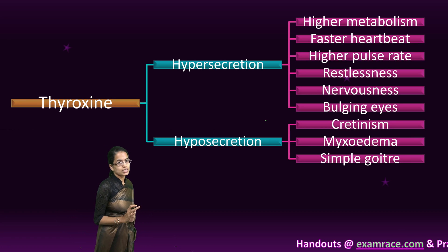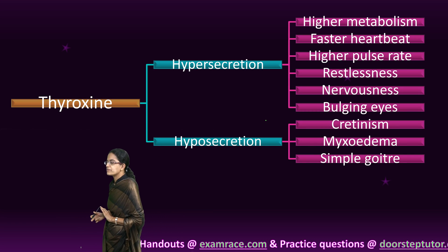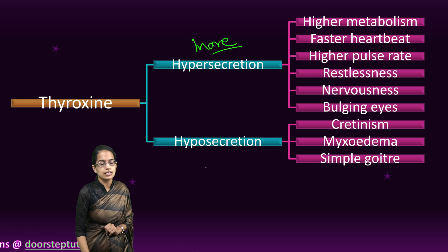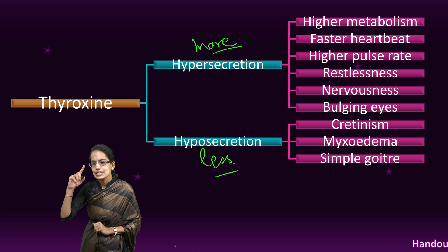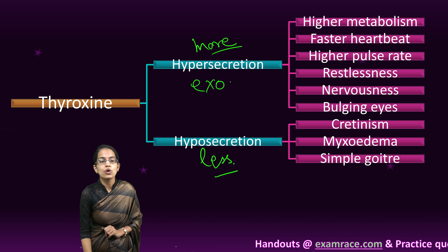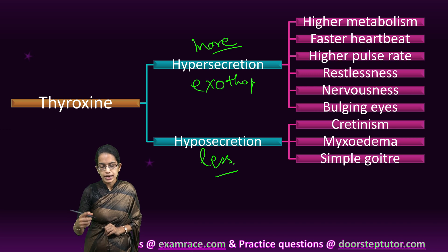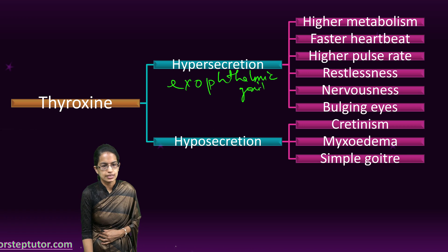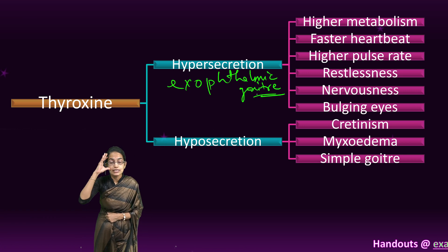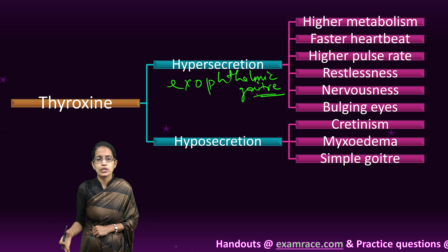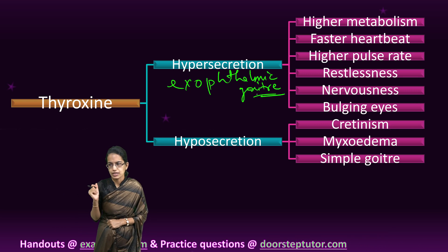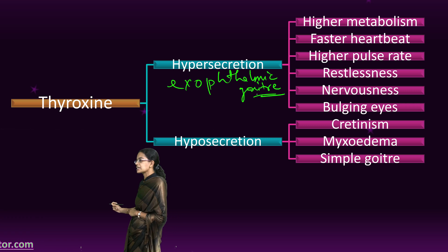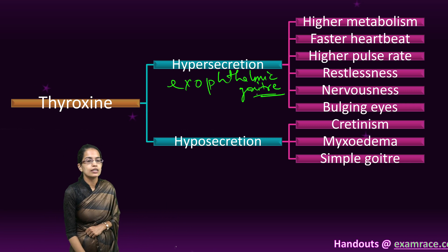The thyroid gland can develop disorders. If there is more secretion — hypersecretion — it leads to exophthalmic goiter. The major characteristics include bulging eyes, nervous temperament, feeling restless, higher pulse rate, faster heartbeat, faster rate of metabolism, and higher respiratory rate. Hypersecretion leads to exophthalmic goiter.